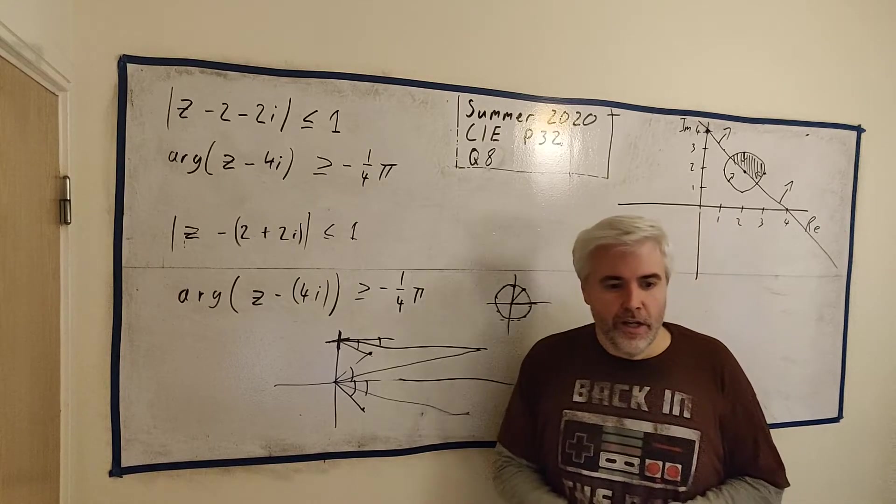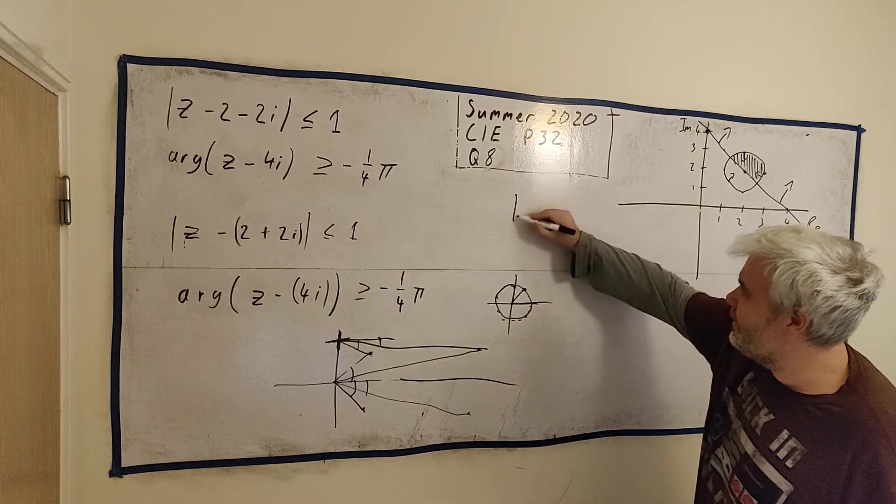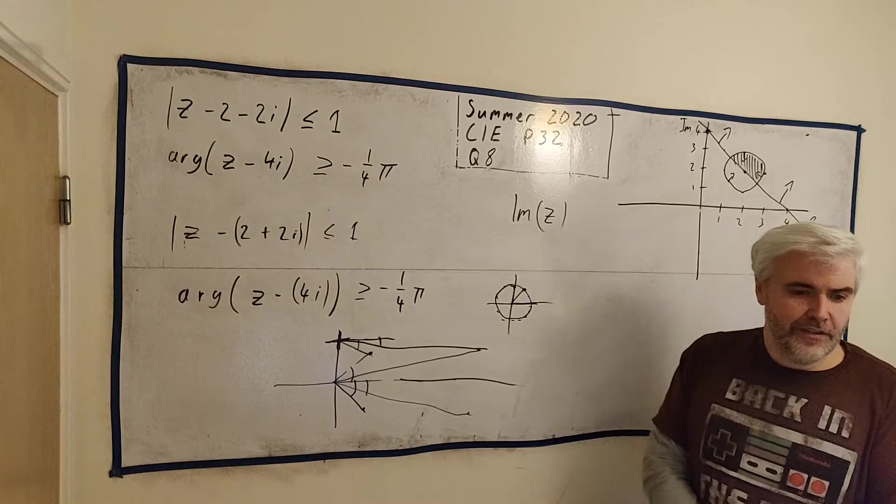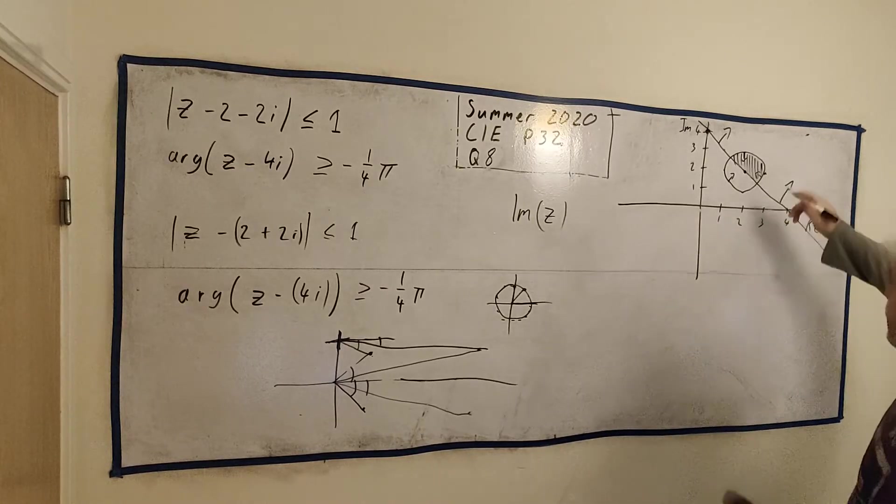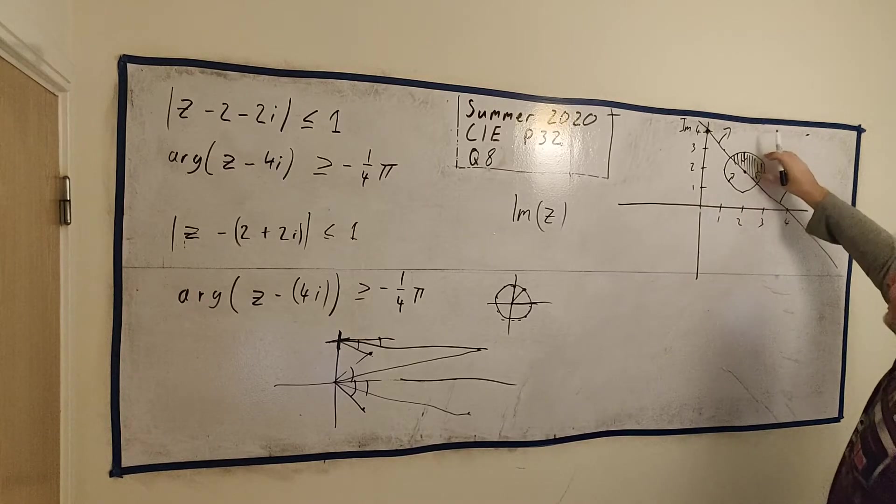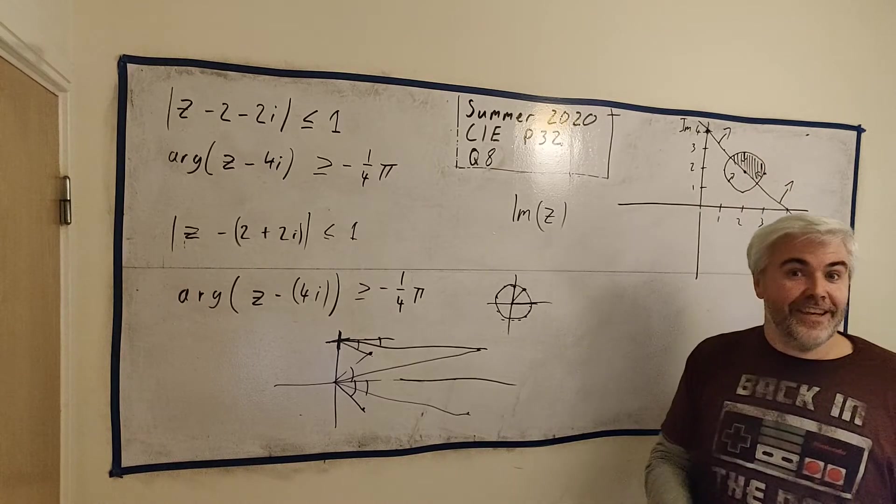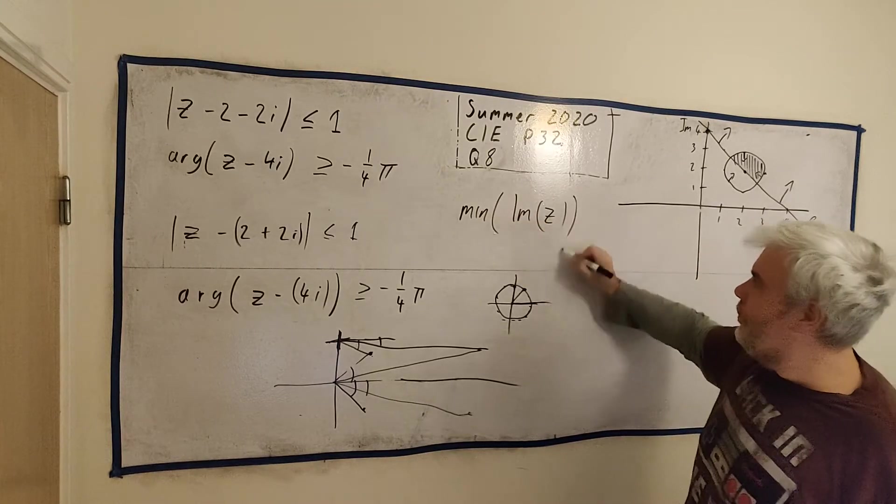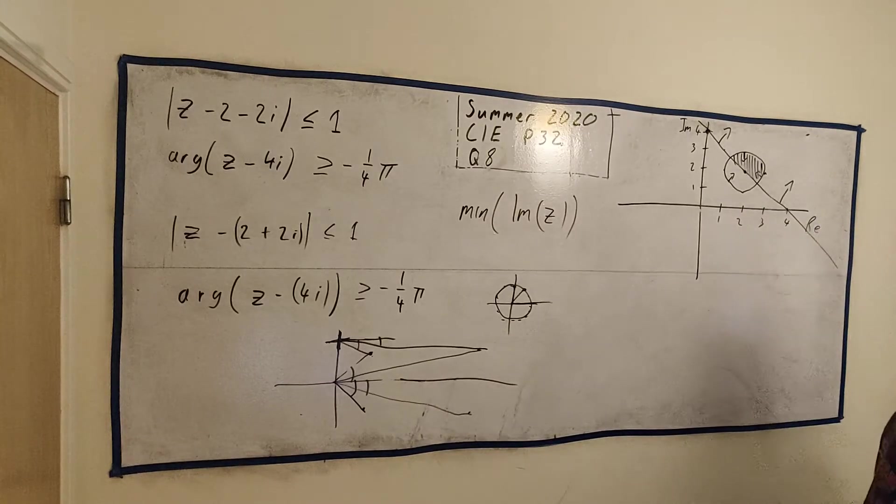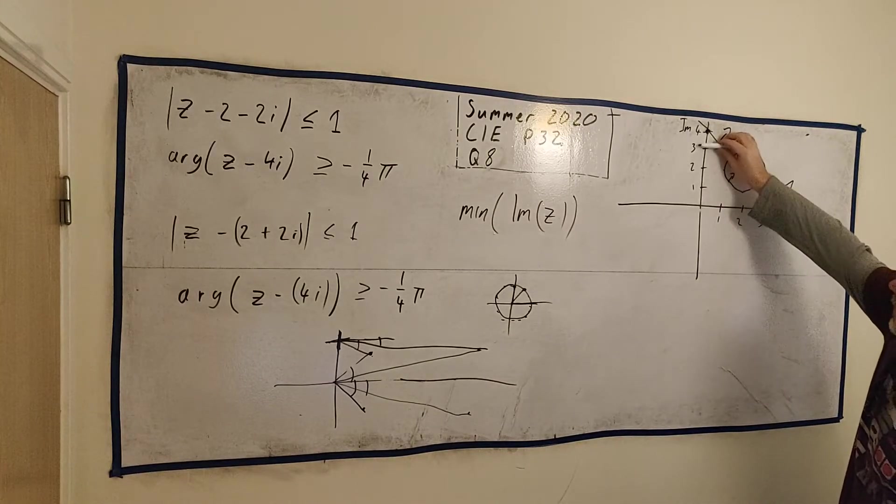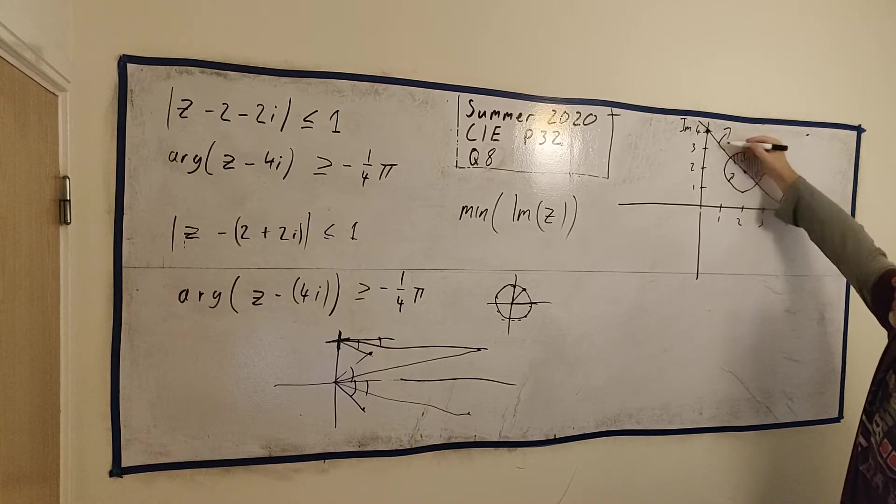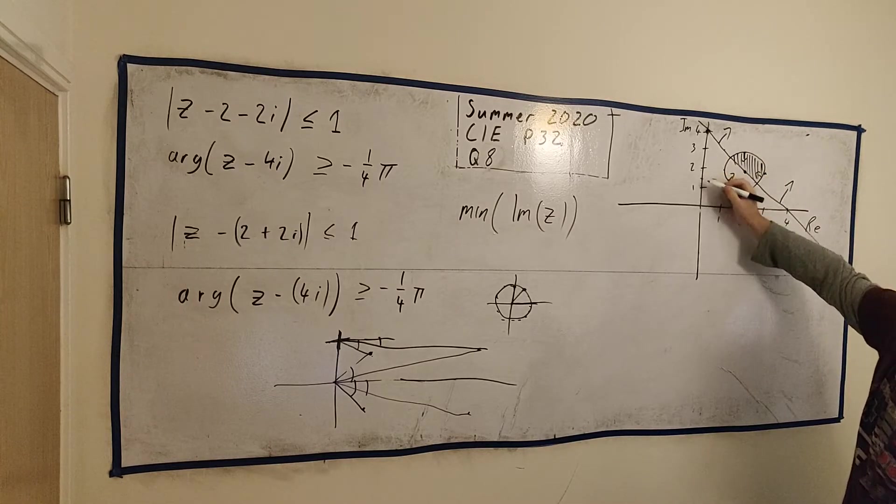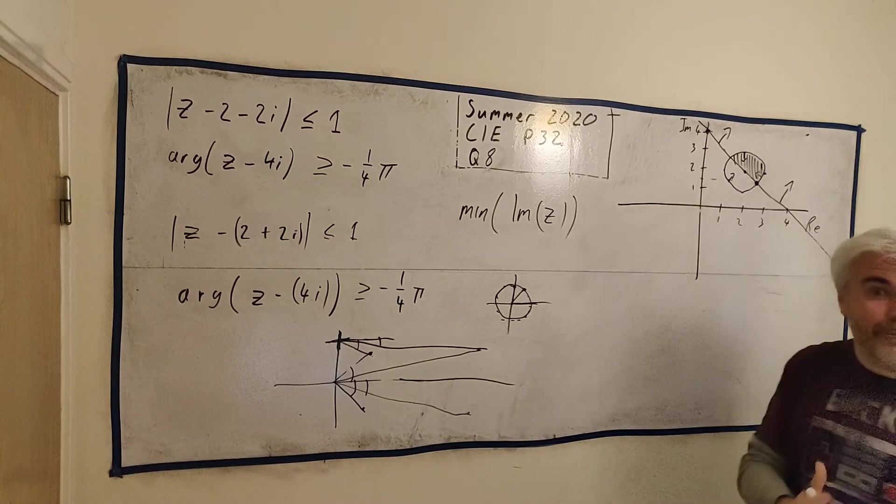We have one last part, B part 2. Find the least value of the imaginary part of z. The imaginary part of z. And here's z. Z is anywhere, or everywhere, inside this shaded region. That's all the possible places z could be. So they want the minimum number of the imaginary part of z. The imaginary part of here is 3, the imaginary value of here is 2. We can get all the way down to here. That's the lowest point. Basically they want to know what that point is.